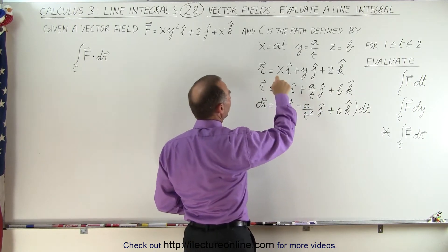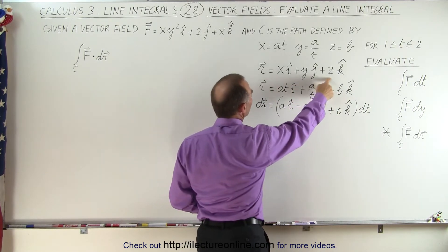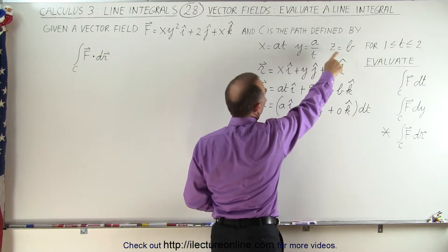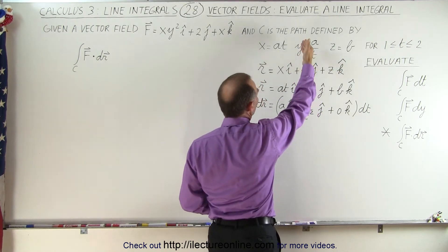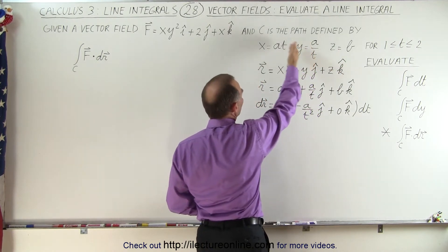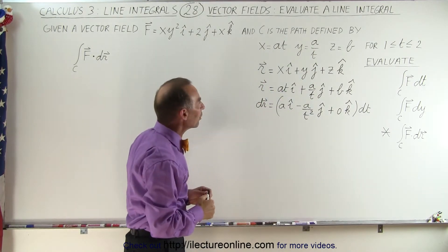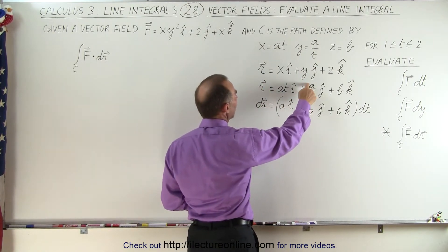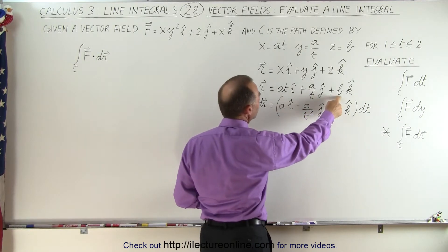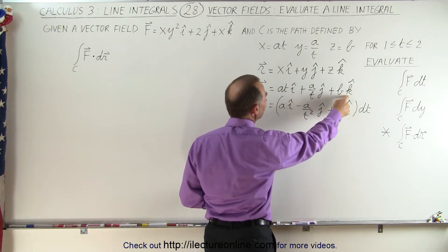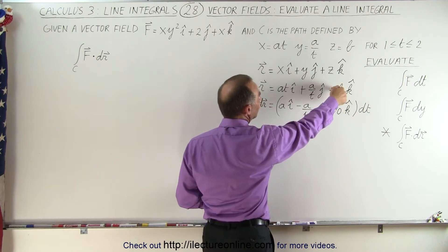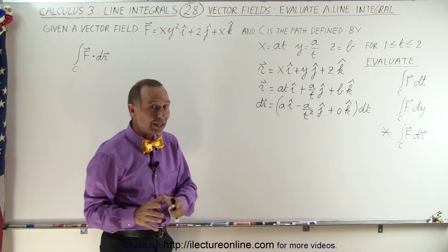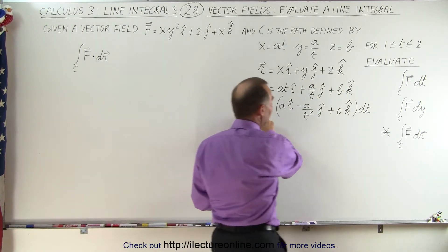If we then replace x, y, and z in terms of what they equal in terms of parametric equations of the variable t — which is the definition of the path we're going to integrate over — this becomes a·t in the i direction, a/t in the j direction, plus b·k in the k direction. Both b and a are constants.